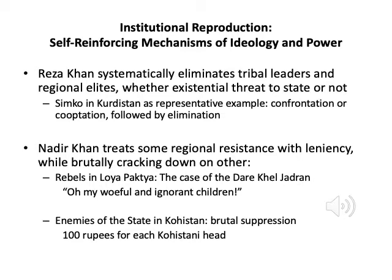In Kuhistan — what we call the Tajik region of Afghanistan — he brutally suppresses an uprising against the central state, offers 100 rupees for each Kuhistan head, blows oppositionists from guns, and takes women and children as essentially slaves.